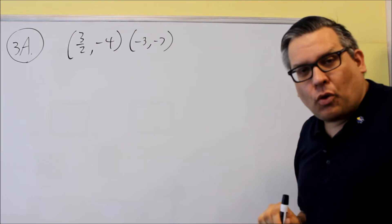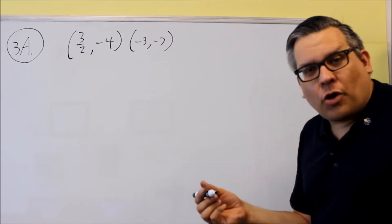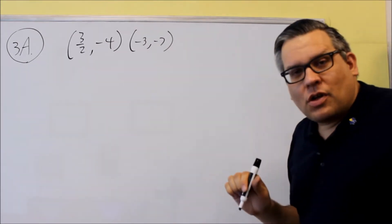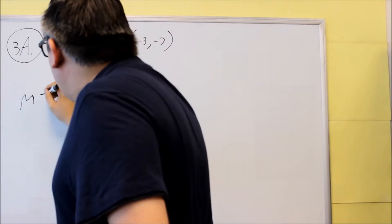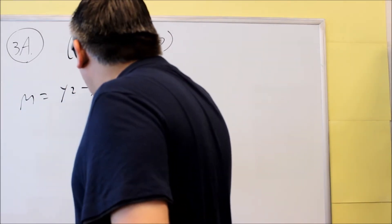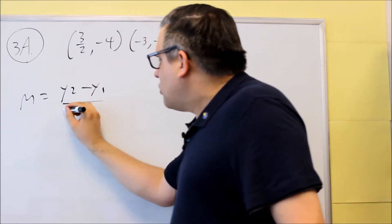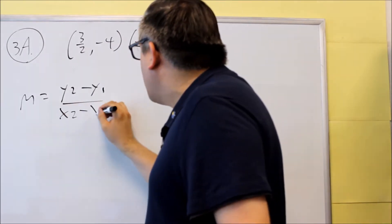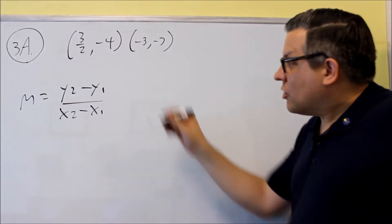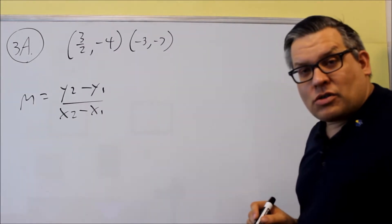So if they give you two points, you need to use a formula to find the slope that passes through two points. The formula, this is your slope formula. It's this one, y2 minus y1 over x2 minus x1. So the y always goes on top.